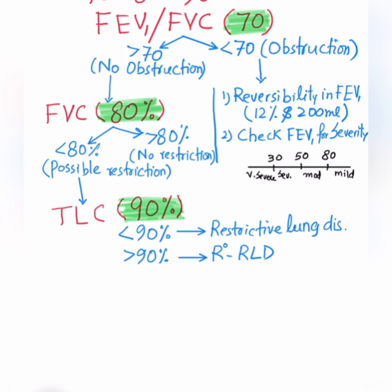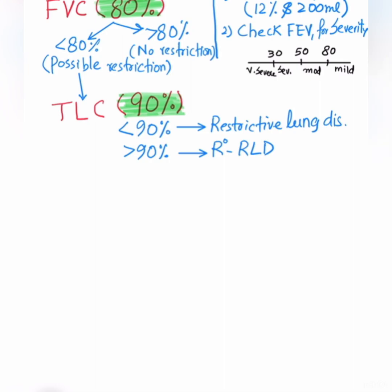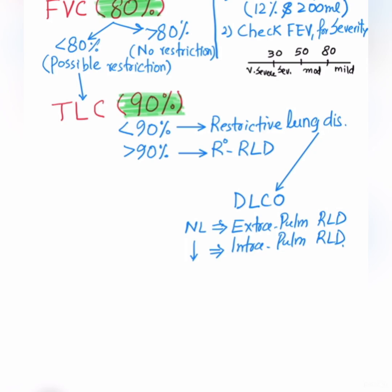To differentiate between extrapulmonary and intrapulmonary restrictive lung diseases, we perform diffusion lung capacity of carbon monoxide, or DLCO. If the patient has normal DLCO, it means the restriction is not coming from the lungs — it's likely extrapulmonary restrictive lung disease, like kyphoscoliosis or neuromuscular disorders such as myasthenia. However, if DLCO is less than 50%, this patient most likely has intrapulmonary restrictive lung disease.